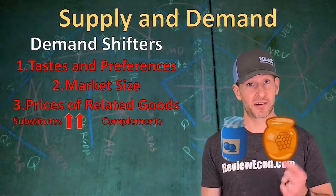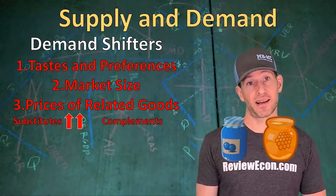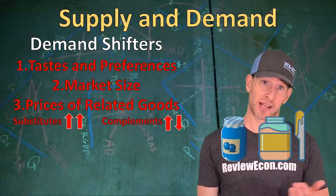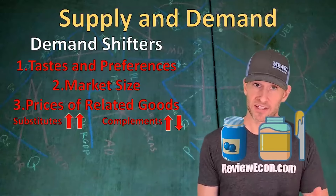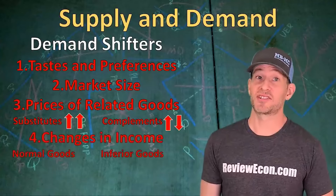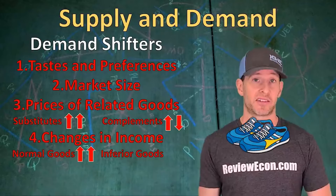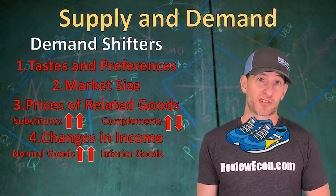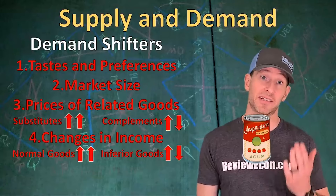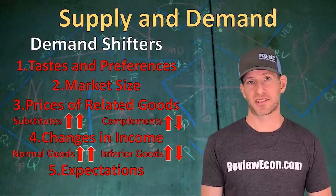Complements — goods that go alongside each other like jam and peanut butter — see demand for one decrease when the price of the other increases. When it comes to income, for normal goods like shoes, an increase in income increases demand. For inferior goods like condensed soup, an increase in income causes a decrease in demand. An increase in demand is illustrated as a rightward shift of the demand curve; a decrease is a leftward shift.